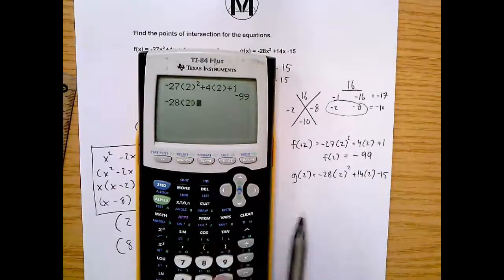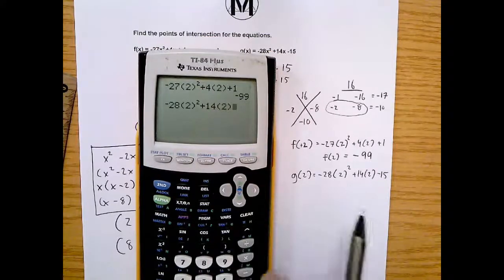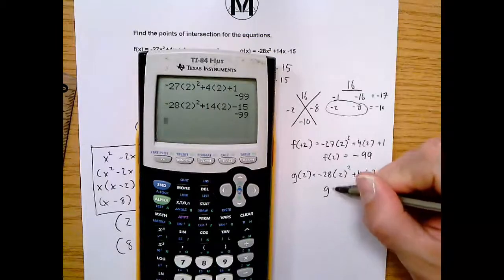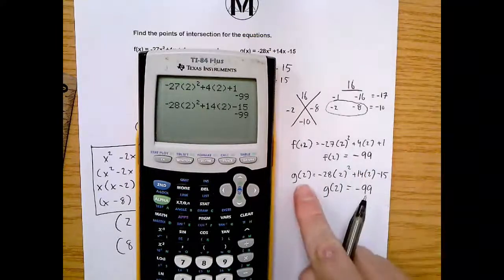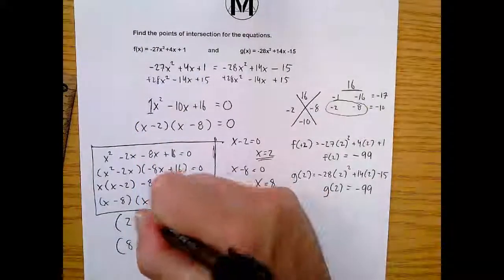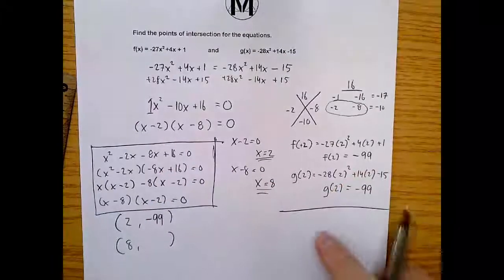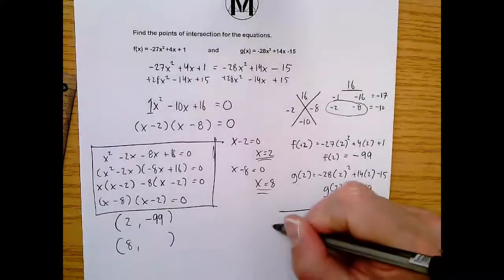-28(2²) + 14(2) - 15. Boom! It worked. What a sigh of relief that is. So we know that when we input 2, -99 is our output. I'm going to draw a line here. I'm going to set it all up one more time for inputting 8.